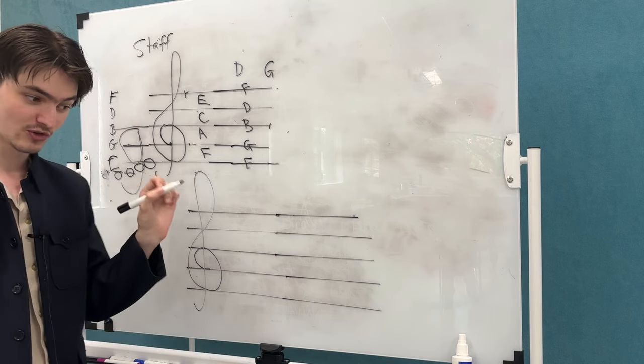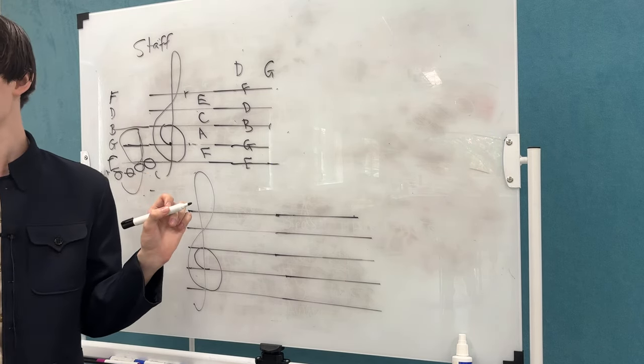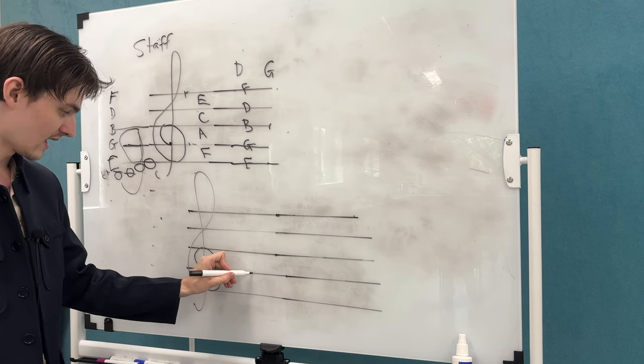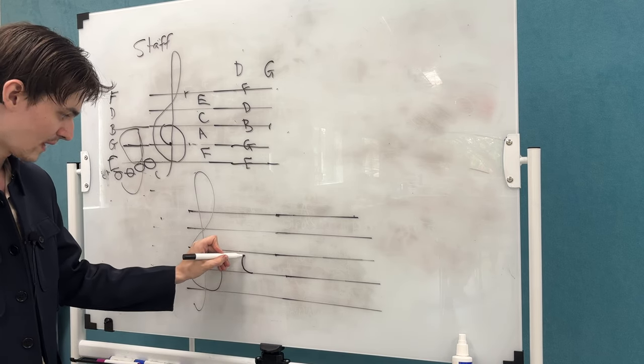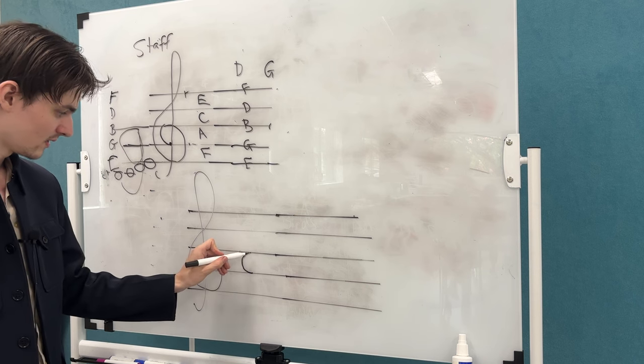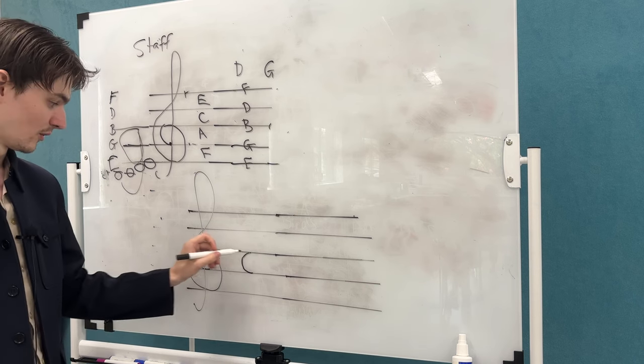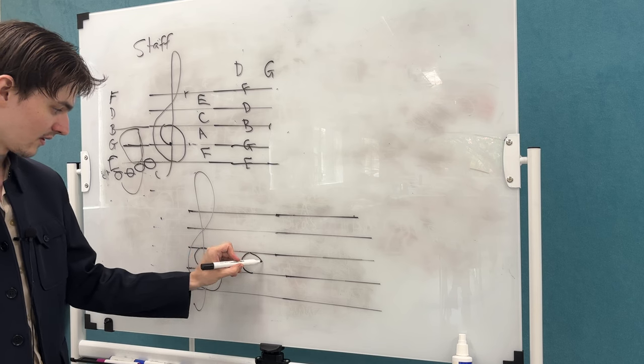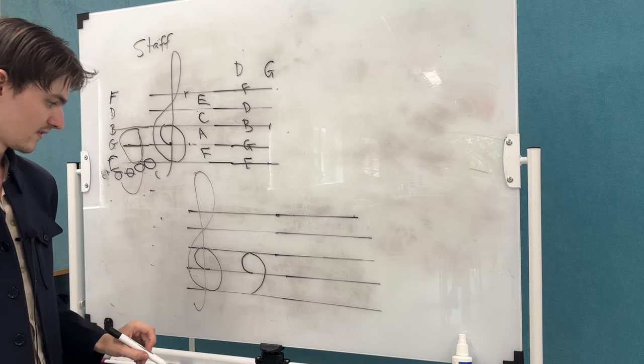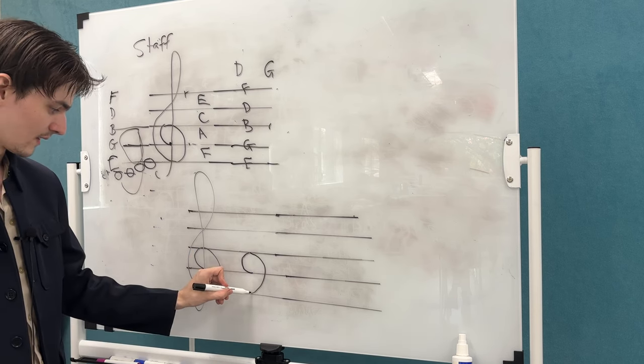Revise how you draw the treble clef. We all got a sheet there. You want to start on the second line, curve up to the third line up to the middle, so the little C there, then back around down to the bottom again.